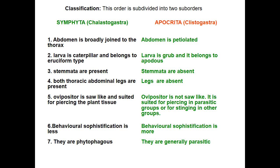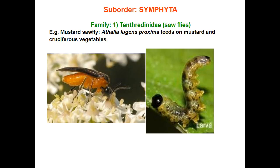Starting from Symphyta, the family is Tenthredinidae and the common insect is the sawfly. They are wasp-like insects. The abdomen is broadly joined to the thorax. Their ovipositor is saw-toothed and suitable for slicing plant tissues. The larvae are eruciform, meaning polypod — they resemble lepidopteran caterpillars.